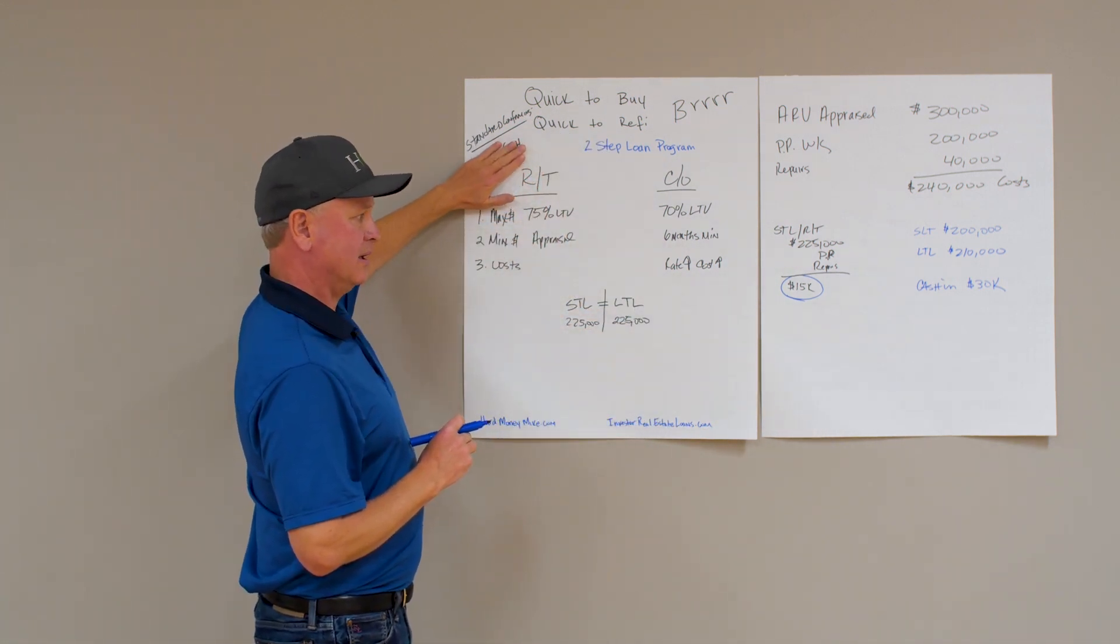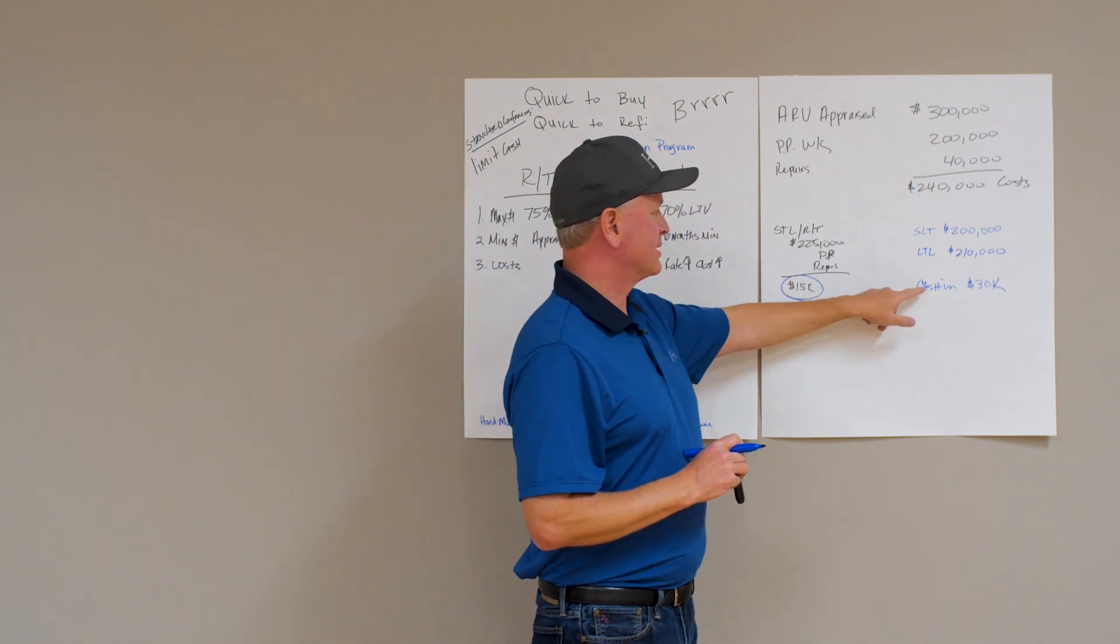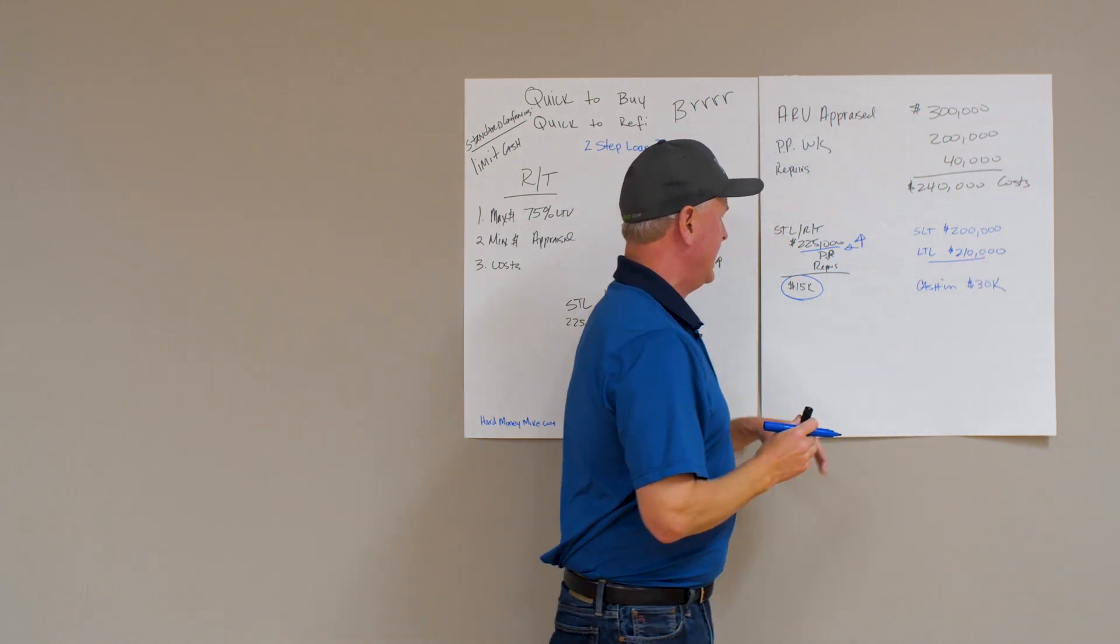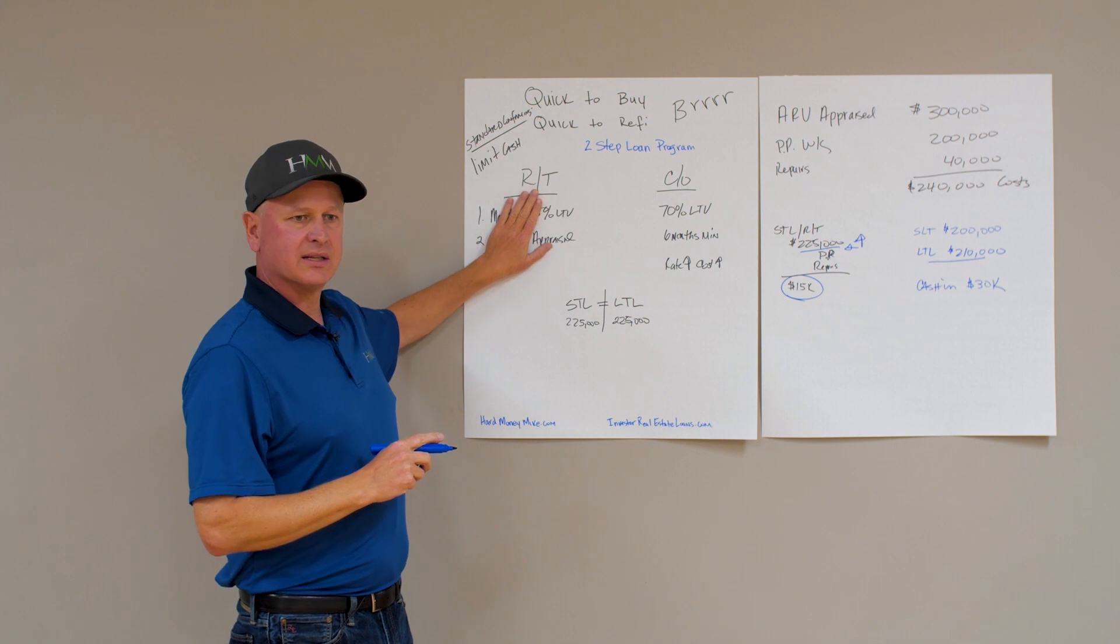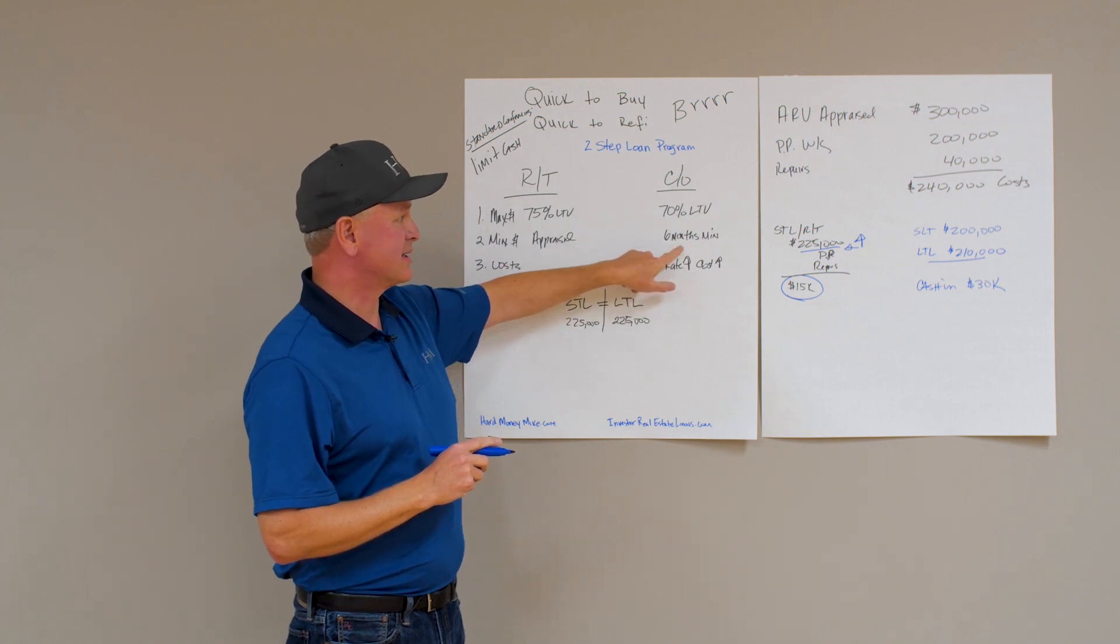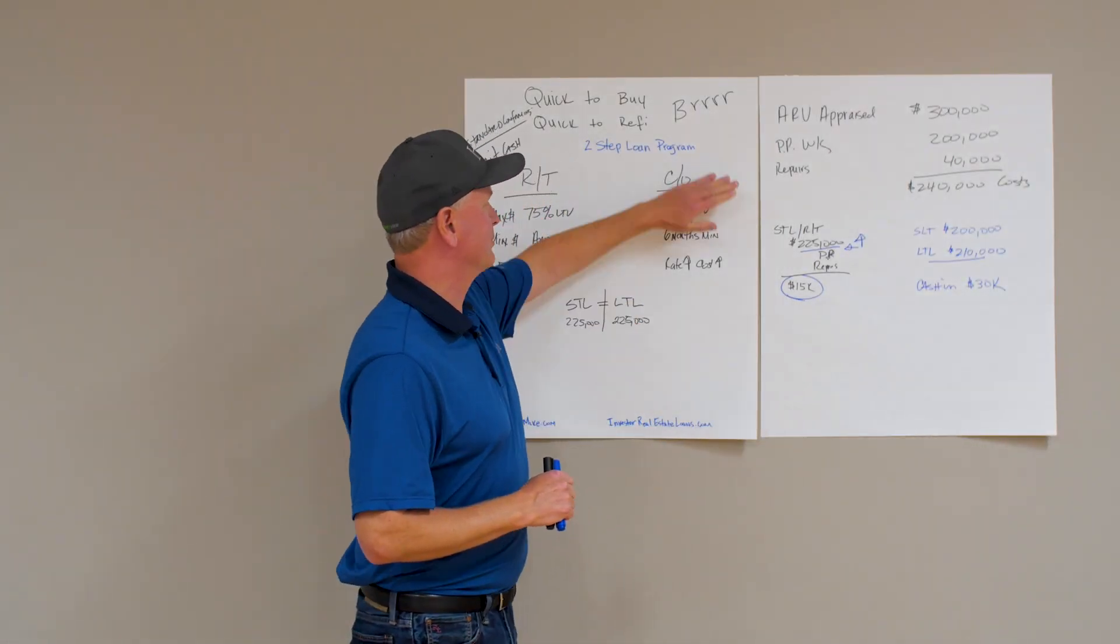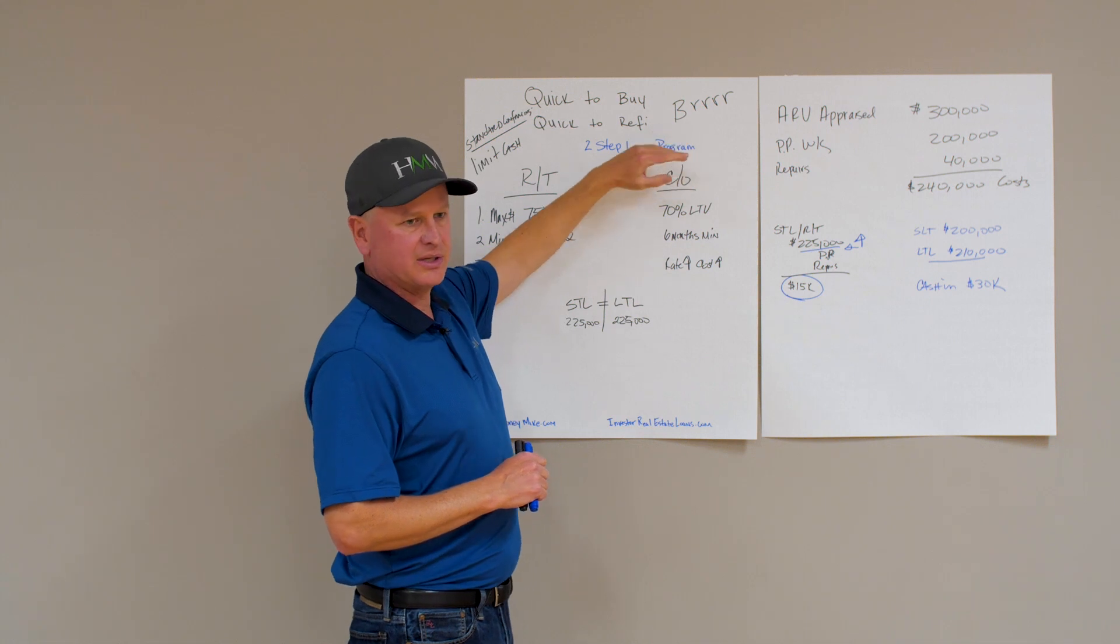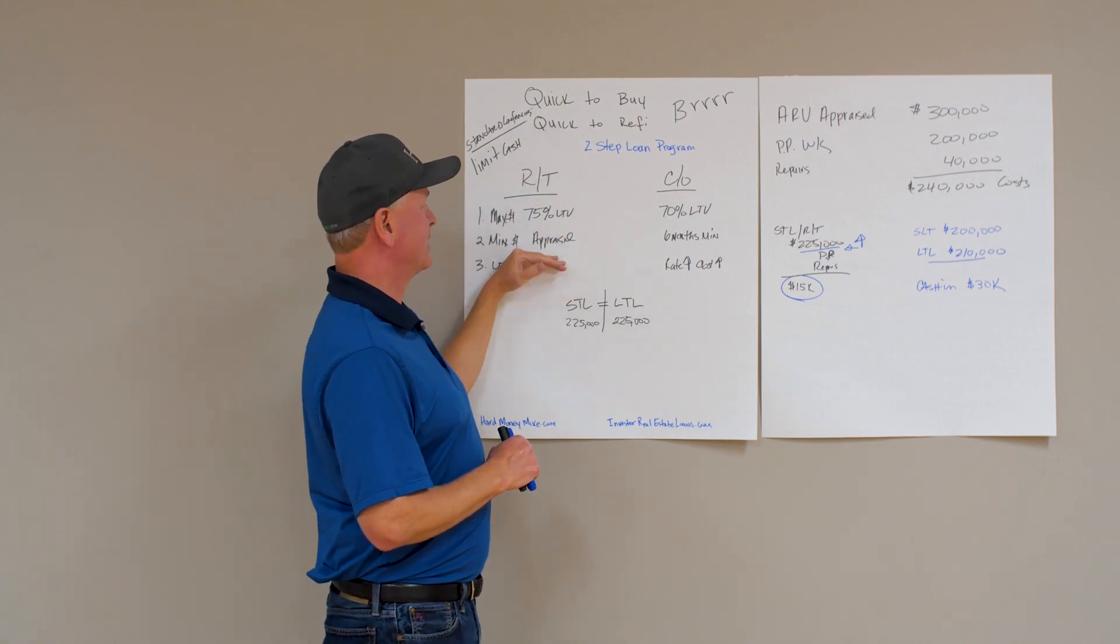Not only that, but you're maximizing your leverage. Remember we're looking at loans where we want to limit our cash and maximize our loan. By using the rate and term process over a cash out process, we're able to do a larger loan and put less cash into the deal. When we set this up, we always want to set it up that we're doing a rate and term for the refinance. If you set this up improperly, it's going to take you longer because you're going to be into this for at least six months and you're going to get less out. This whole concept is about working with the BRRRR system, quick to buy, quick to refinance.